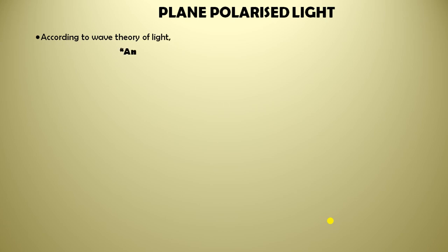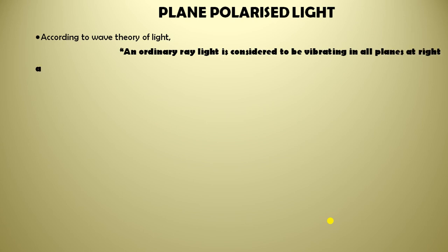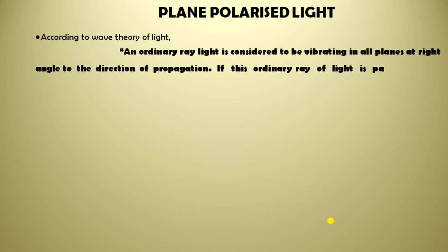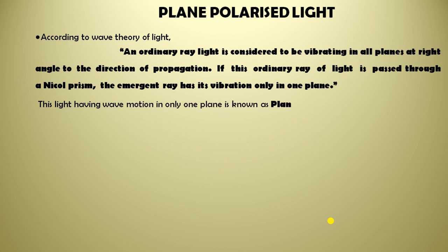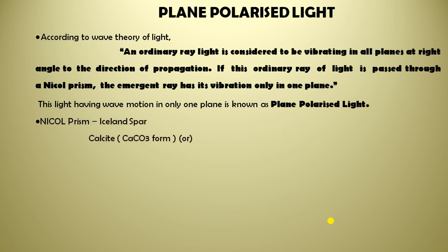Now, what exactly is plane polarized light? According to the wave theory of light, an ordinary ray of light is considered to be vibrating in all planes at a right angle to the direction of propagation. If this ordinary ray of light is passed through a Nicol prism, the emergent ray has its vibration only in one plane. This light having wave motion in only one plane is known as plane polarized light, and to obtain it, a Nicol prism is used.